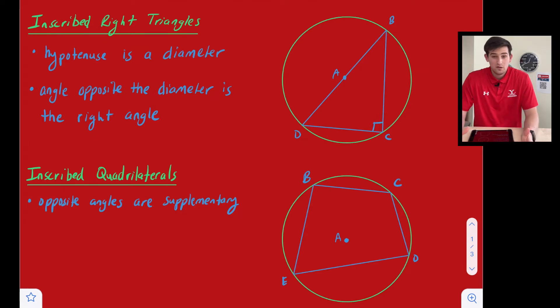So a couple things we need to know about an inscribed right triangle. The first thing is that the hypotenuse of the right triangle is the diameter of the circle.